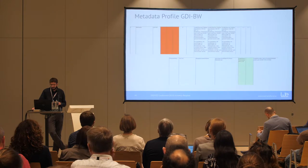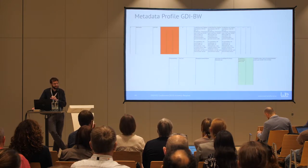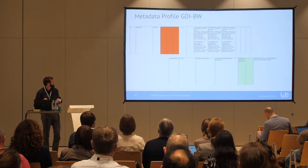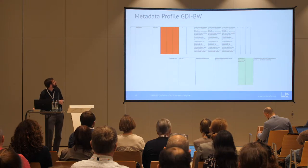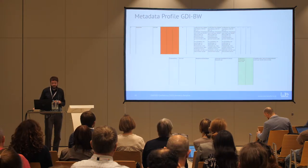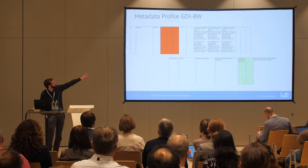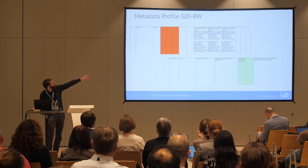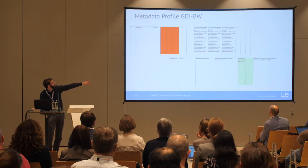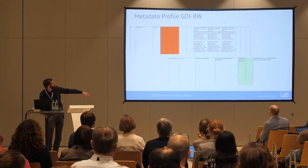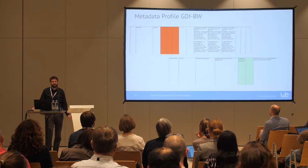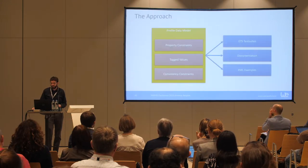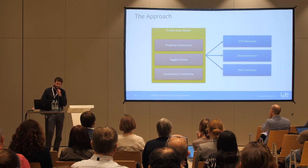Looking into more detail — the Excel table has a few hundred rows where each row has a running number, a name, an indication of whether it's mandatory, and additional information about how to use it: cardinality, examples, and so on. We looked at this information and thought: how can we capture that in a computer-processable model? Essentially, what we created is a profile data model which contains property constraints — for example, defining allowed values or occurrence, or whether content is required.